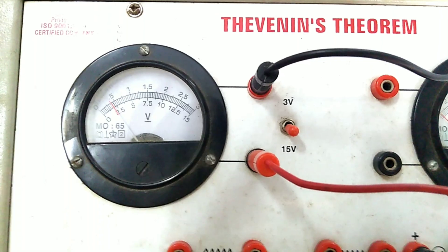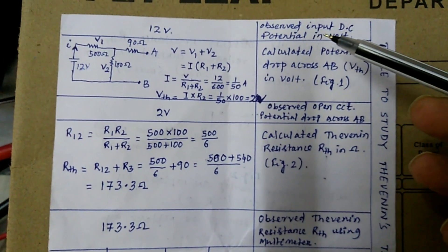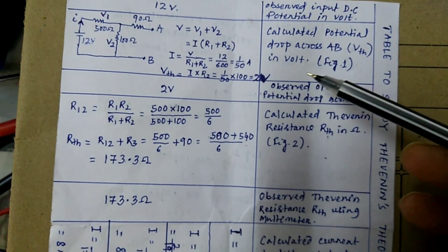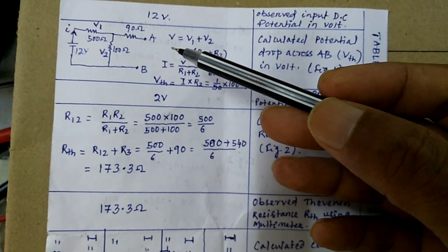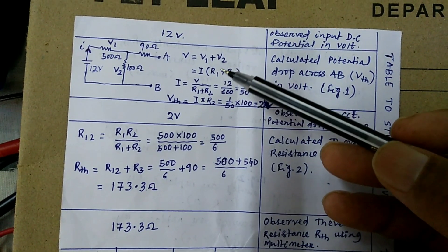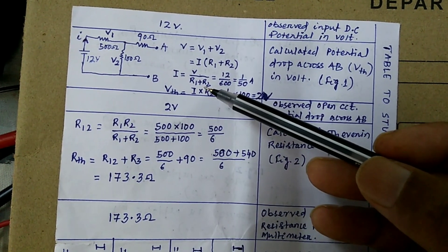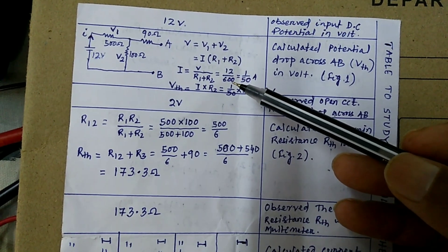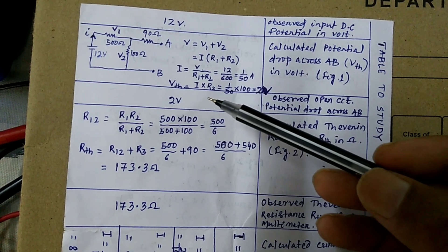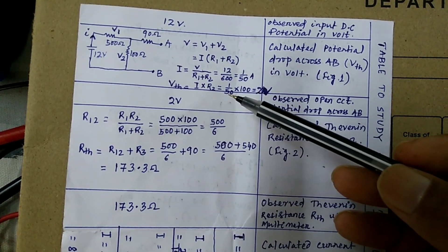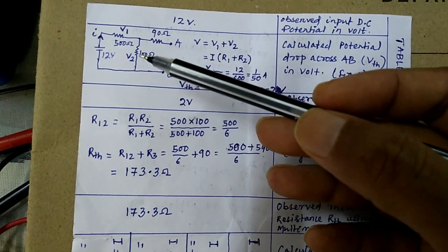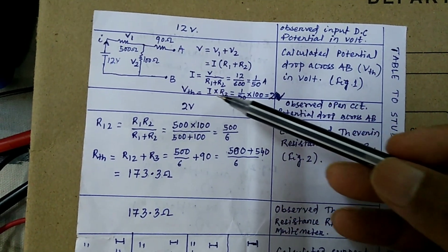As shown in the experiment, the Thevenin voltage is 2 volt. The input voltage is 12 volt and Thevenin voltage is 2 volt. You calculate the Thevenin voltage from this circuit — there are three resistances and using V = IR, you can calculate the current through the circuit, then the voltage across resistance R2, which equals 2 volt. If this matches with the Thevenin voltage, then your circuit is correct.